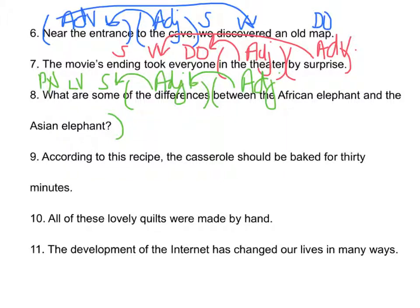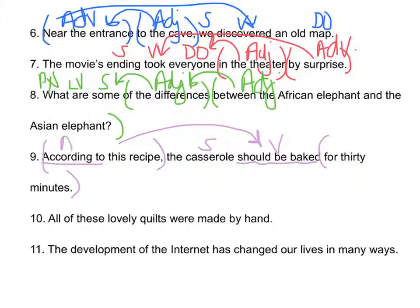'According to this recipe, the casserole should be baked for 30 minutes.' 'According to' is a compound preposition. 'For 30 minutes' is also a phrase. 'Should be baked' is the verb; the casserole is the subject. 'According to this recipe' — it should be baked according to the recipe — modifying the verb: adverbial phrase. 'For 30 minutes' — should be baked for 30 minutes — also adverbial.